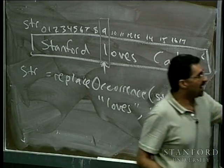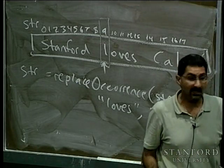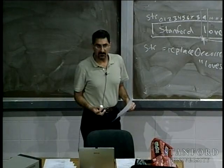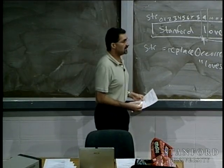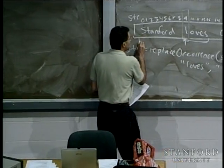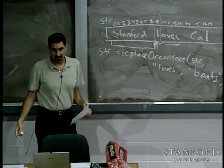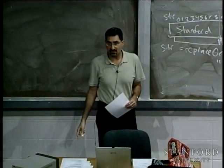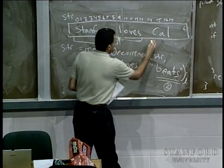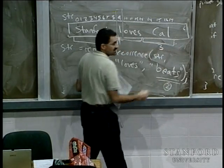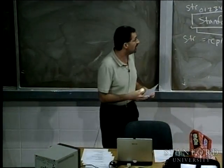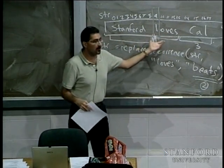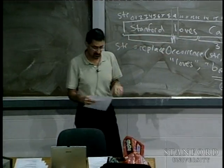Now if I've got index nine and I want to construct a new string with 'loves' removed and replaced, I think about the string as three pieces: first, everything up to the word I want to replace; second, the replacement string; and third, everything after the piece I've replaced. If I concatenate those three pieces together, I get the new string. The question is how to find the appropriate indexes.